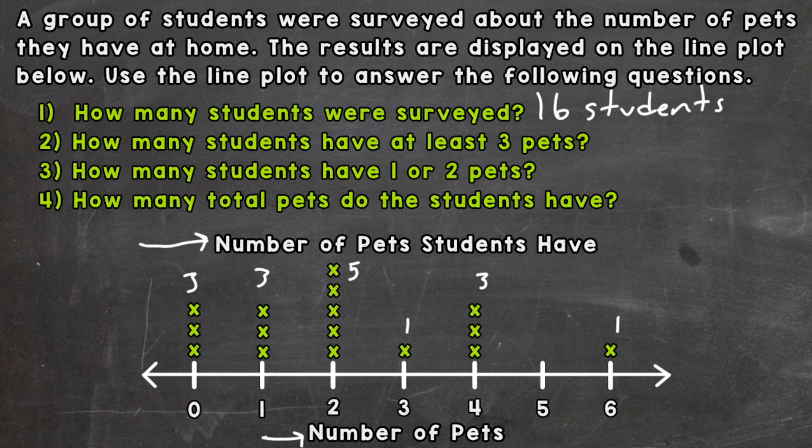So number two, how many students have at least three pets? So at least means three or more. So we include three. So let's see. Well, for three or more, at least three, we need to look at this portion of the line plot. So we have one here for three pets, three for four, and one for six. So that is a total of five students.